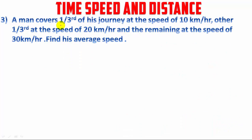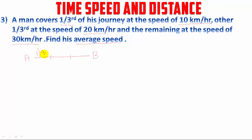Now we move on to the third question. A man covers one-third of his journey at the speed of 10 km per hour, another one-third at the speed of 20 km per hour, and the remaining one-third at the speed of 30 km per hour. Find his average speed. Unlike the previous question with two equal distances, here three equal distances are given.